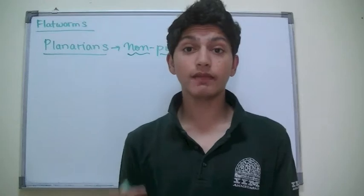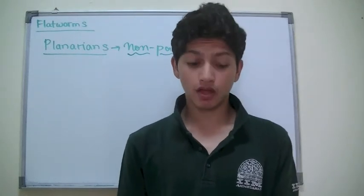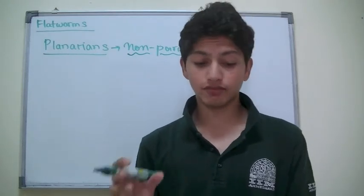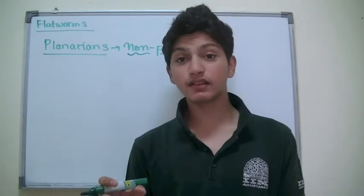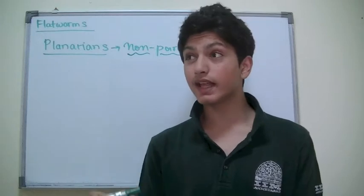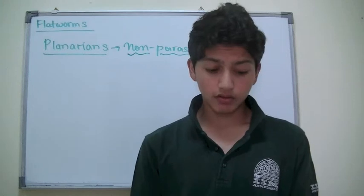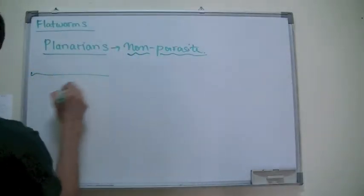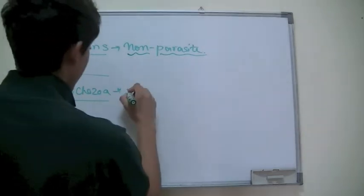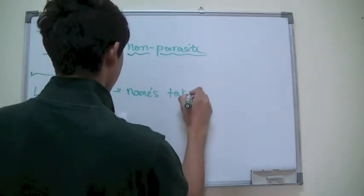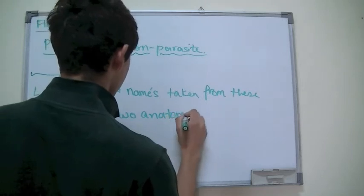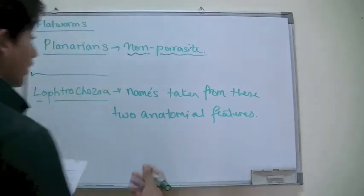Before we talk about any types of flatworms, most flatworms are classified together as members of Lophotrochozoa. These animals have a feeding structure made up of hollow tentacles known as a lophophore. Lophotrochozoa also includes free-swimming ciliated larvae known as a trochophore. This name is basically derived from these two anatomical features that flatworms contain.